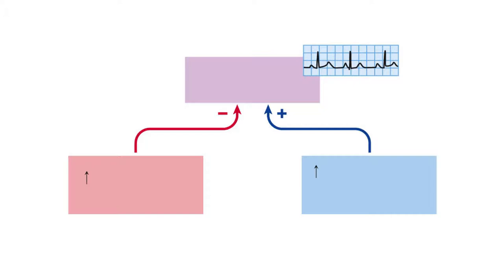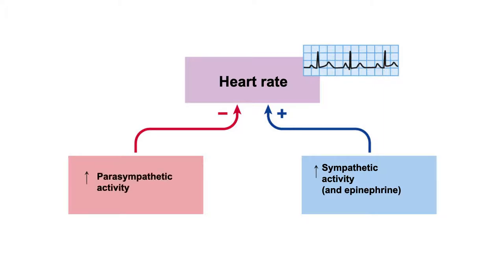Heart rate can be increased with sympathetic activity and decreased with increased parasympathetic activity. Heart rate can be altered in either direction by shifting this balance of the autonomic nervous system — speed up by increasing sympathetic while decreasing parasympathetic, and vice versa. Note that epinephrine can also increase heart rate; it's not an autonomic response but acts in the same manner as the sympathetic response.